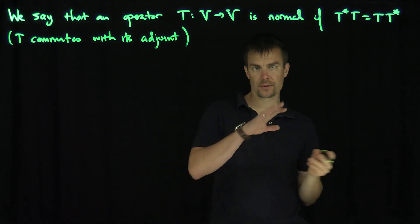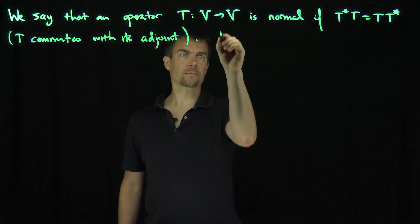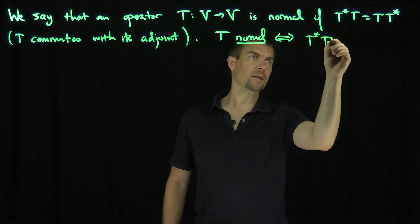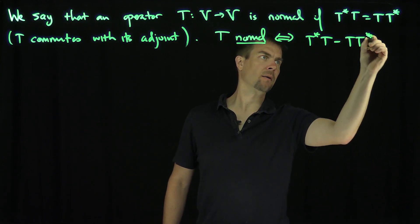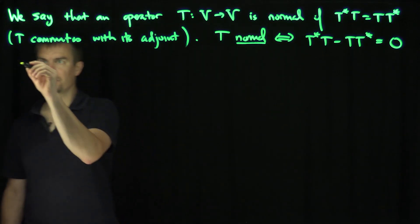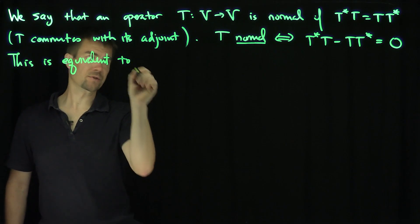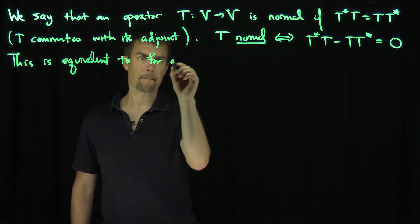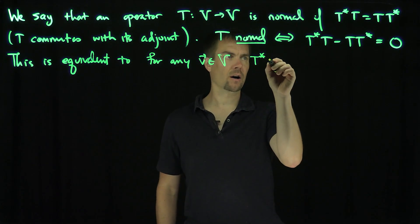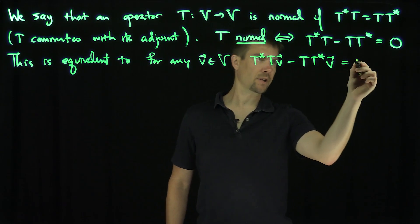Normal operators are special because they preserve norm structures. Notice that t is normal if and only if t-star t minus t t-star is the zero operator, which is equivalent to saying that for any v in your vector space v, t-star t v minus t t-star v equals zero.